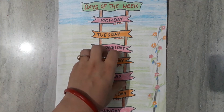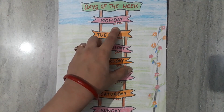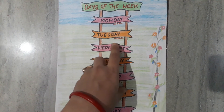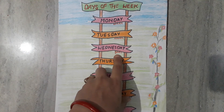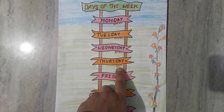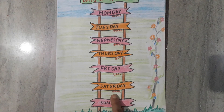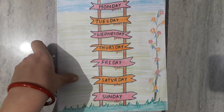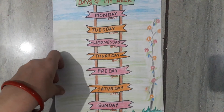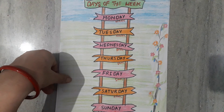First of all, let's see the days of the week. Monday — Somwar, Tuesday — Mangalwar, Wednesday — Budwar, Thursday — Guruwar, Friday — Shukwar, Saturday — Sunwar, Sunday — Ravivar. Now we will teach you the days of the week.